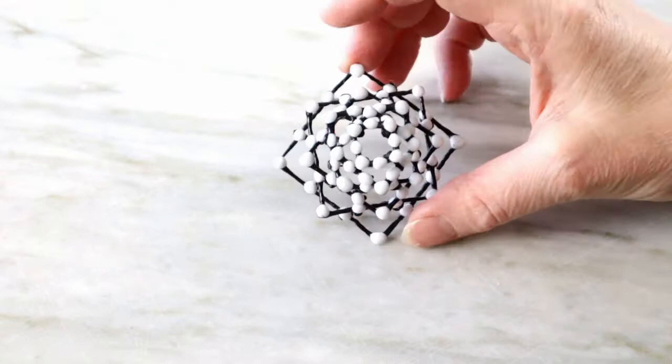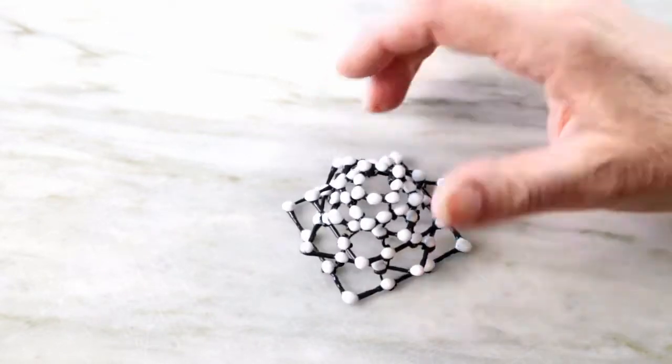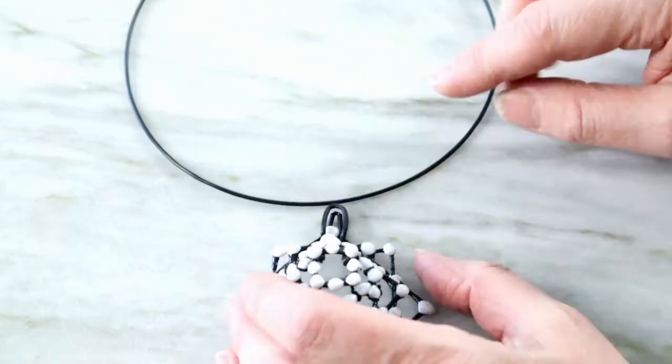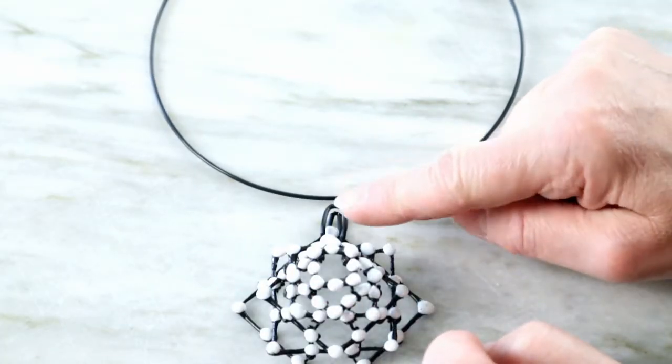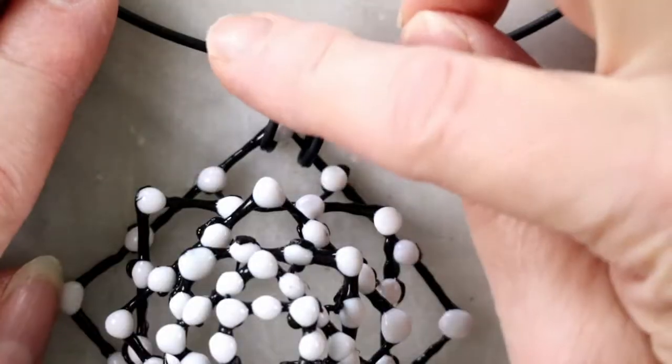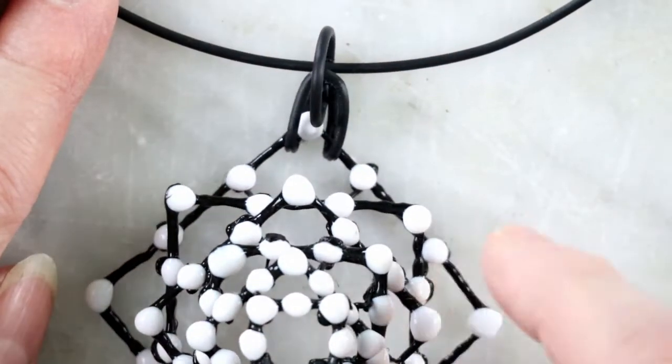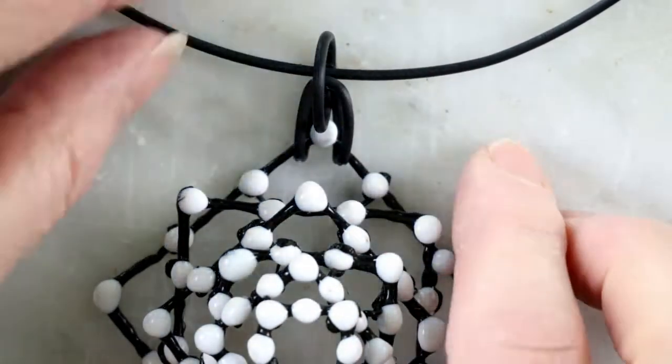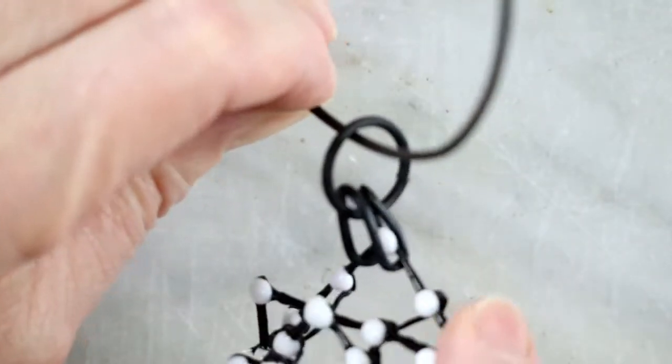When you need to hang something, let's say a pendant onto a neck ring, you will need something to connect it all. Jump rings are designed to connect one plane to a perpendicular plane. Like so. Hence the name.